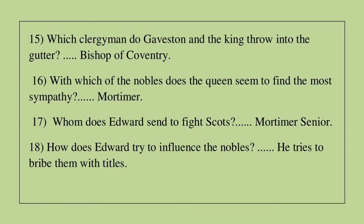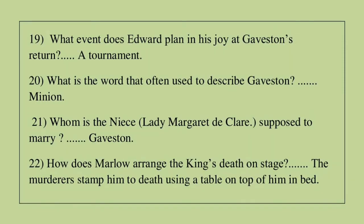Question 15: Which clergyman do Gaveston and the king throw into the gutter? The answer is the Bishop of Coventry. Question 16: With which of the nobles does the queen seem to find the most sympathy? The answer is Mortimer. Question 17: Whom does Edward send to fight the Scots? The answer is Mortimer Senior. Question 18: How does Edward try to influence the nobles? He tries to bribe them with titles. Question 19: What event does Edward plan in his joy at Gaveston's return? A tournament. Question 20: What is the word often used to describe Gaveston? The answer is minion.